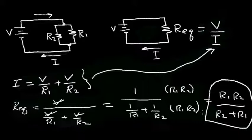So whenever you have resistors in parallel, the equivalent resistor is always smaller than any of the resistors in the parallel circuit.